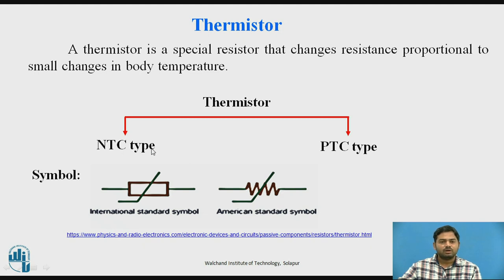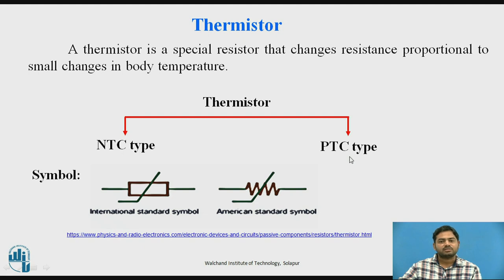NTC thermistors are manufactured from metal oxides and semiconductors. In PTCs, the material used is a conductor, because conductors exhibit PTC characteristics — meaning a conductor's resistance increases with increasing temperature. In NTCs, as temperature increases, resistance decreases, which shows the negative property.